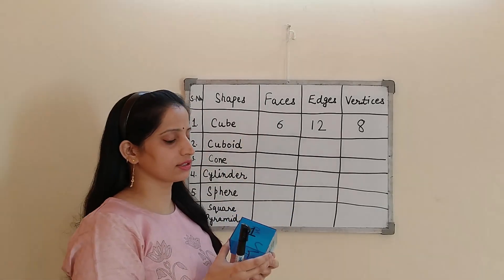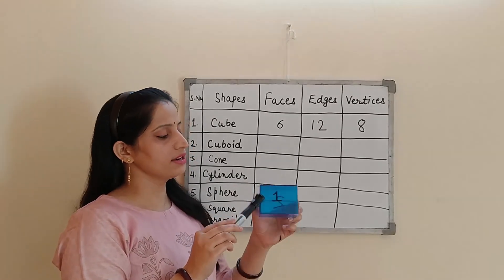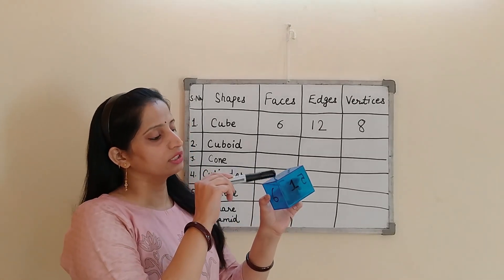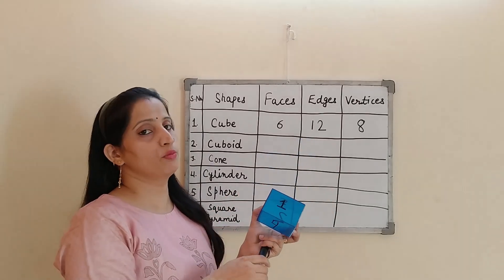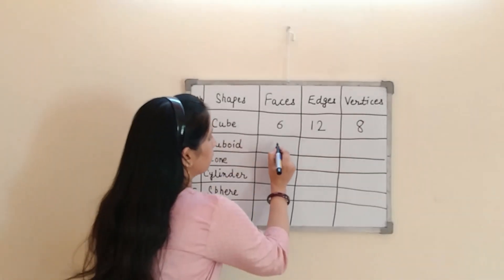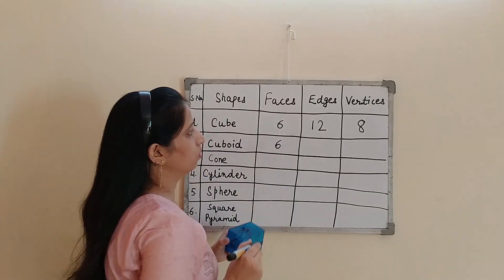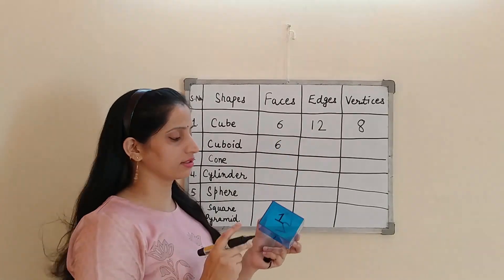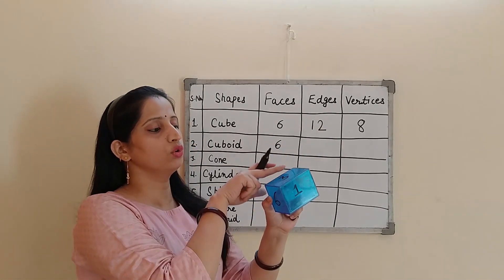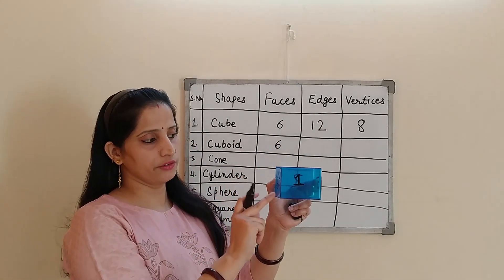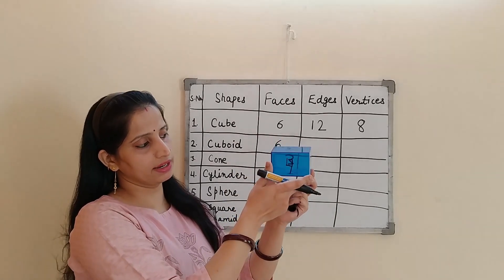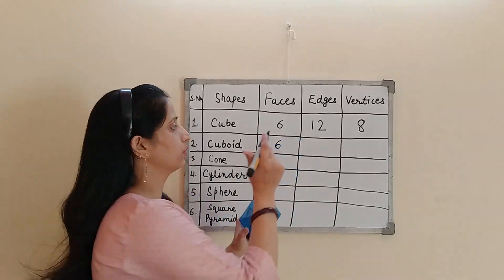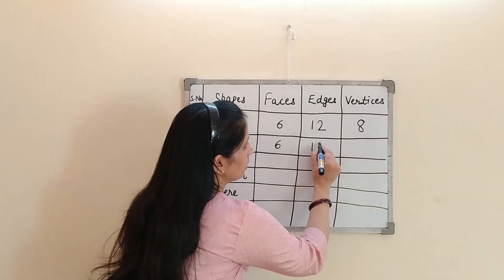So now let's talk about the faces. Again, 1, 2, 3, 4, 5, and 6. How many faces? 6 faces. Now number of edges. 1, 2, 3, 4, 5, 6, 7, 8, 9, 10, 11, and 12. It is having 12 edges.